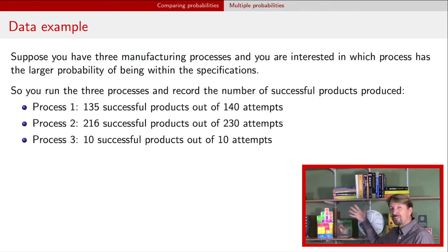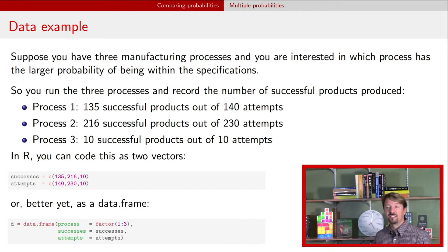So now compared to the other two, we have a lot less data because we only have 10 runs as opposed to 140 and 230. But hey, all of them were successful. So that sounds promising. And so we want to be able to make some kind of statement about this kind of situation. And the last bit here is just how I coded it up in R. Just notice here that successes and attempts are both vectors of length three.